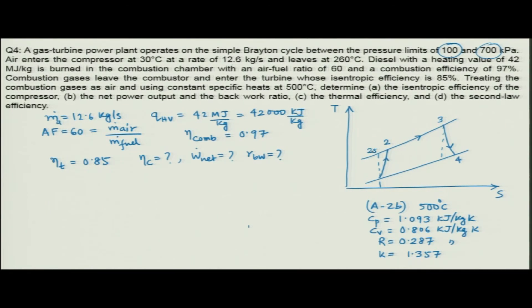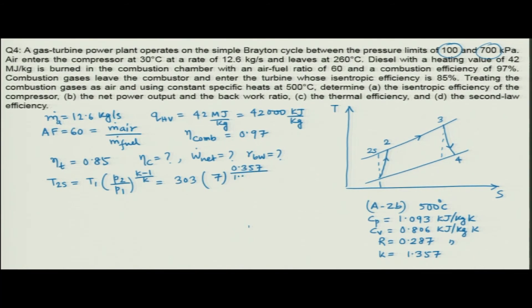For the isentropic compression 1 to 2s: T_2s = T_1 × (P_2/P_1)^((k-1)/k) = 303 × 7^(0.357/1.357) = 505.6 Kelvin. The actual exit temperature T_2 is given as 260 degree centigrade, so T_2 = 533 Kelvin.